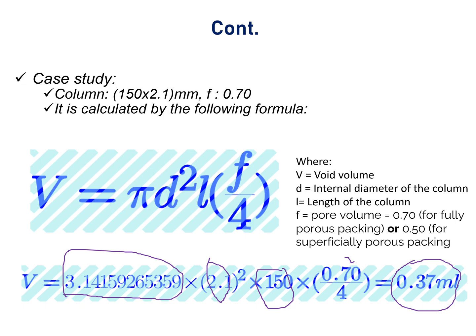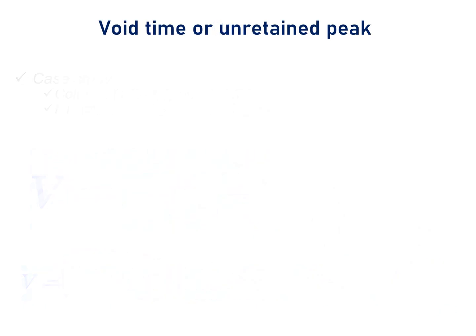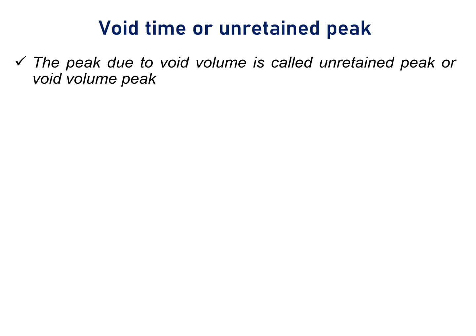Now, the question is what is the unretained peak and how is it related to void volume? I am going to discuss in the next slide. Void time or unretained peak. The peak due to void volume is called unretained peak or void volume peak. Theoretically, it is said that void volume solvent has its own peak in the chromatographic condition.